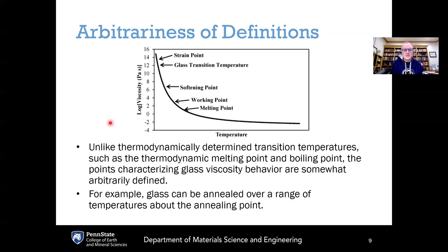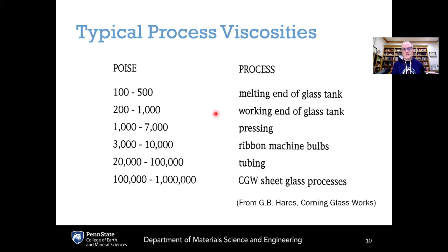One thing to note about these viscosity reference points is the arbitrariness of the definitions. Unlike thermodynamically determined transition temperatures such as the thermodynamic melting point or boiling point, these viscosity reference points are somewhat arbitrarily defined based on their utility within an industrial manufacturing environment. For example, a glass can be annealed over a range of temperatures either somewhat above or below the annealing point — it doesn't have to be exactly at the annealing point. Likewise, the glass can be melted at temperatures somewhat above or below the defined melting point.